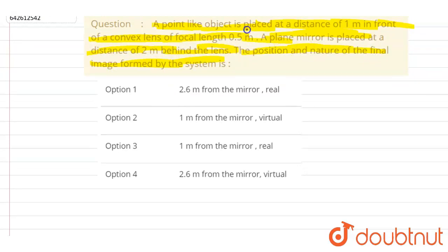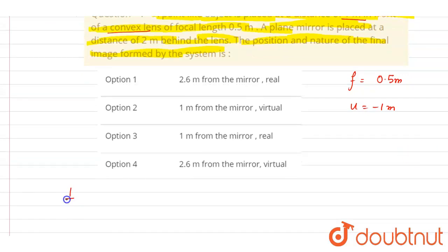So if you see, the object is placed at a distance of this much and the mirror is convex lens. The convex lens, we know that the focal length will be positive, and u equals minus one meter. So you can get v here.